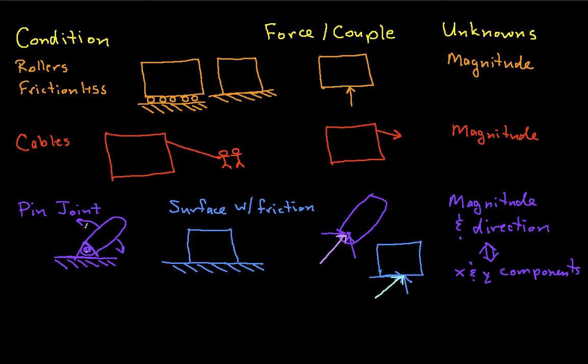The thing that is different between a surface with friction and a pin joint is that there are some restrictions on the horizontal component in the sense that the magnitude, the maximum magnitude of this horizontal component depends on a coefficient of friction and on the magnitude of the vertical component.